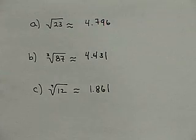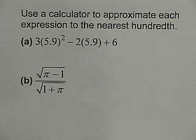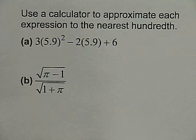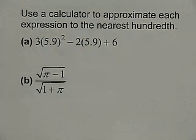Take a look at these next examples and try working them out on your calculator. You're asked to approximate each expression to the nearest hundredth. The first is 3 times the quantity (5.9 squared minus 2 times 5.9 plus 6), and the second is the square root of (pi minus 1) divided by the square root of (1 plus pi). Take a minute and try these on your own and check back when you've completed them.